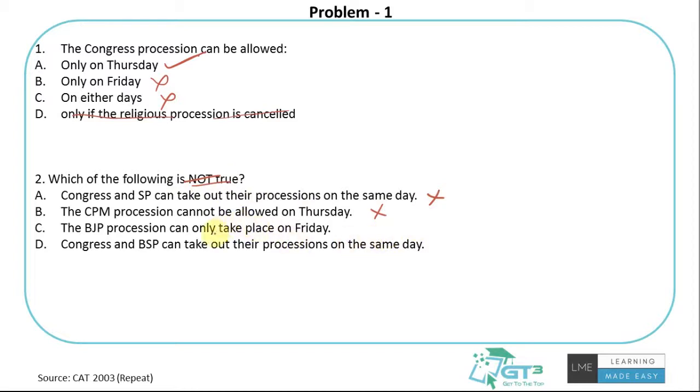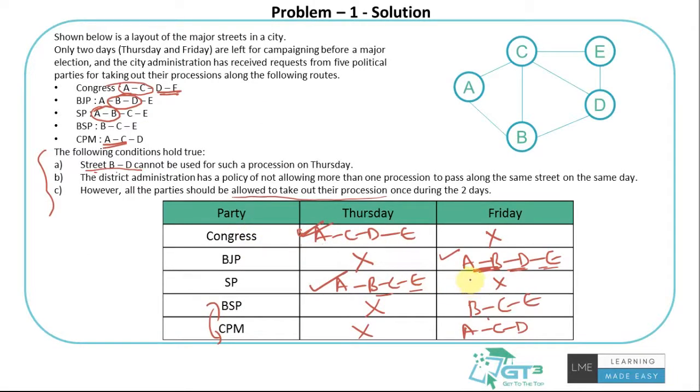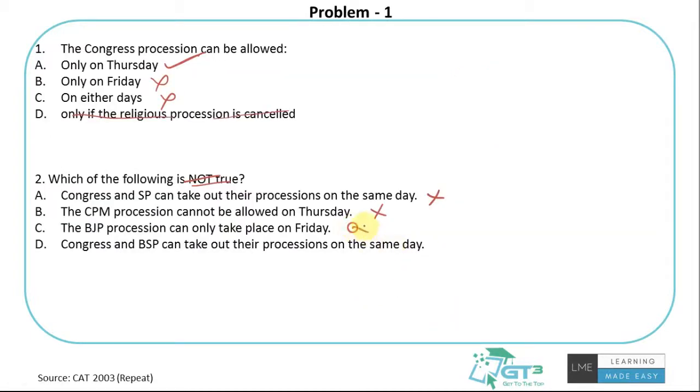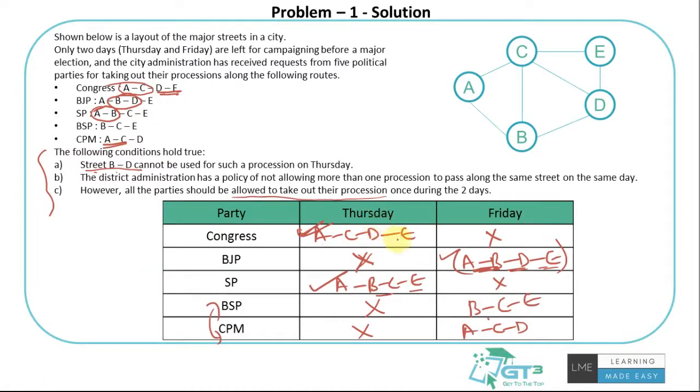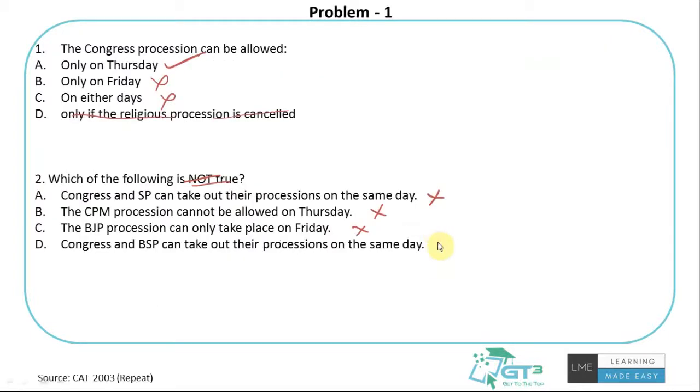BJP procession can only take place on Friday, which is again correct. BJP can only do it on Friday. They have to use BD, which is blocked on Thursday. Congress and BSP can take out their processions on the same day. Congress and BSP are doing it on different days. They are not doing it on the same day. So this is not a correct statement. Hence option D is the incorrect statement, which I need to select to mark the answer.